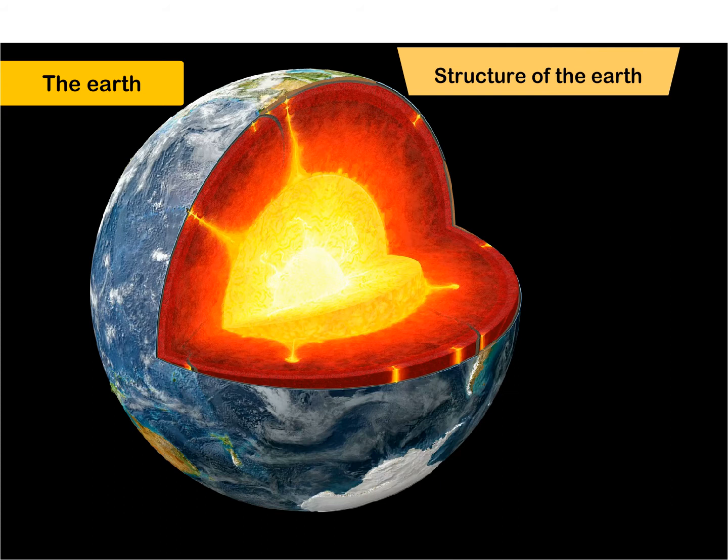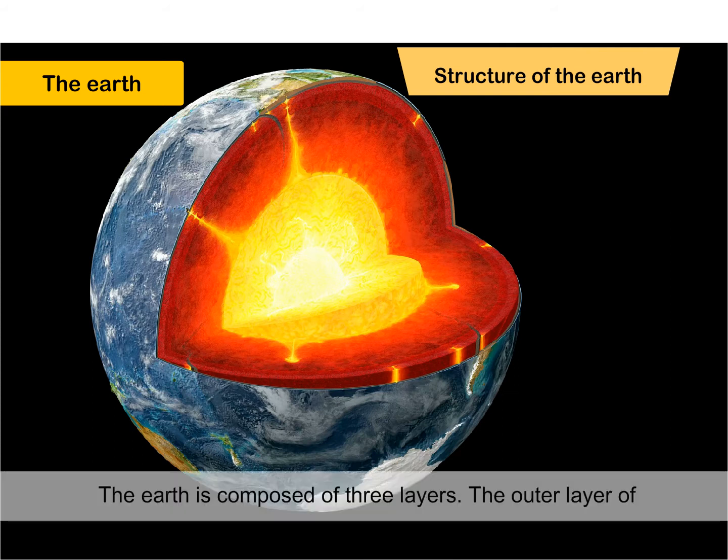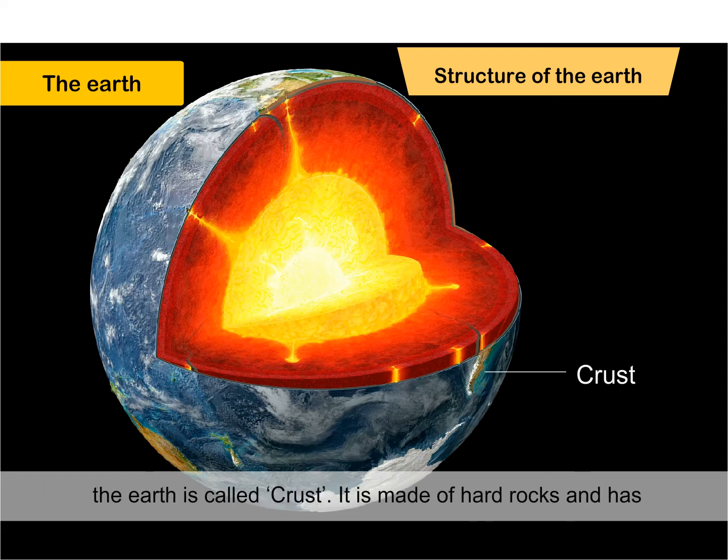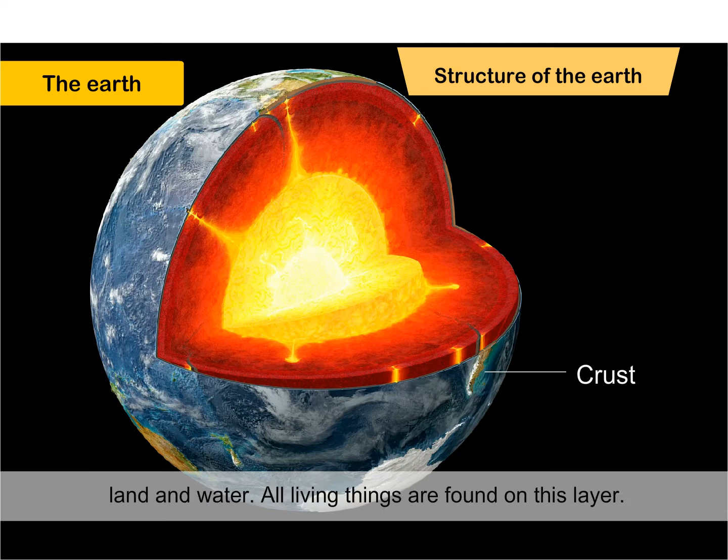Structure of the Earth. The Earth is composed of three layers. The outer layer of the Earth is called crust. It is made of hard rocks and has land and water. All living things are found on this layer.